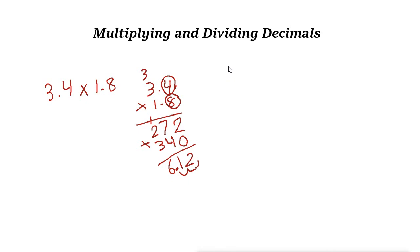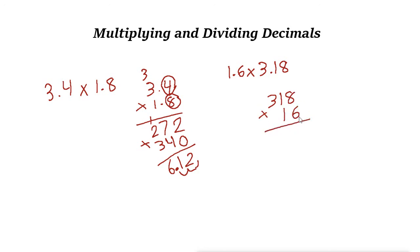Let's try another example: 1.6 multiplied by 3.18. Again, ignore the decimal point — just write 318 times 16 and do the multiplication. 6 times 8 is 48, keep 4. Then 6 times 1 plus 4 is 10, write 0 keep 1. 6 times 3 is 18, so it becomes 19.